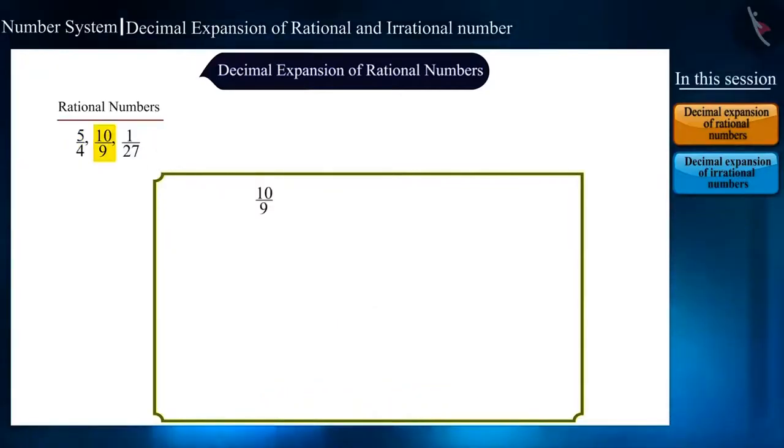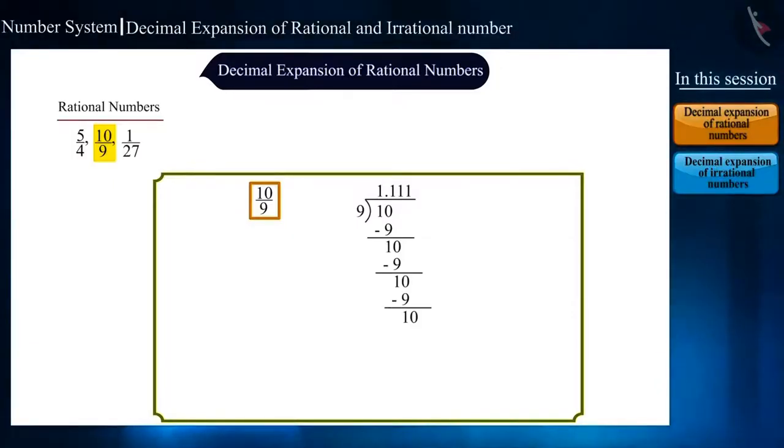Now let's take the next example, 10 by 9. Here, when 10 is divided by 9, the remainder 1 is repeating instead of getting a 0. Similarly, in the quotient also, 1 is repeating and its decimal expansion is continuing in form of 1.1111. If you observe it carefully, it is a never-ending process.